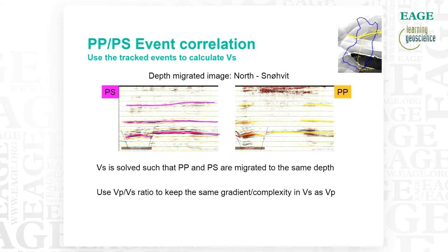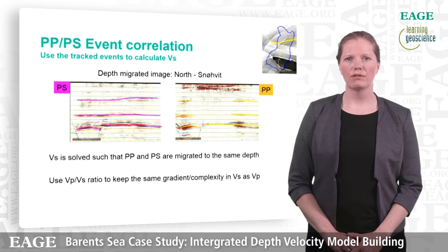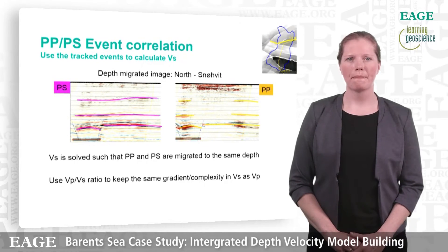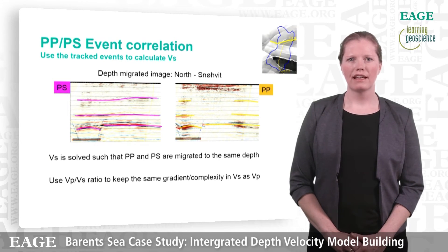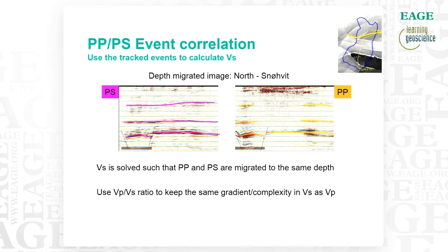Then we move to the event correlation that is used to extract the S velocity. On the sides we can interpret both on the PP and PS. In the middle we need to interpolate from the good areas to the bad areas, but there is some reflectivity in the PP that helps constrain the model. It is also important to note that you can either use the VP/VS ratio to keep the same gradient and complexity in VS as in VP, or you can solve for the VS directly. We assumed that the VS would be stable across the gas cloud but the VP/VS ratio should have an imprint of the gas.